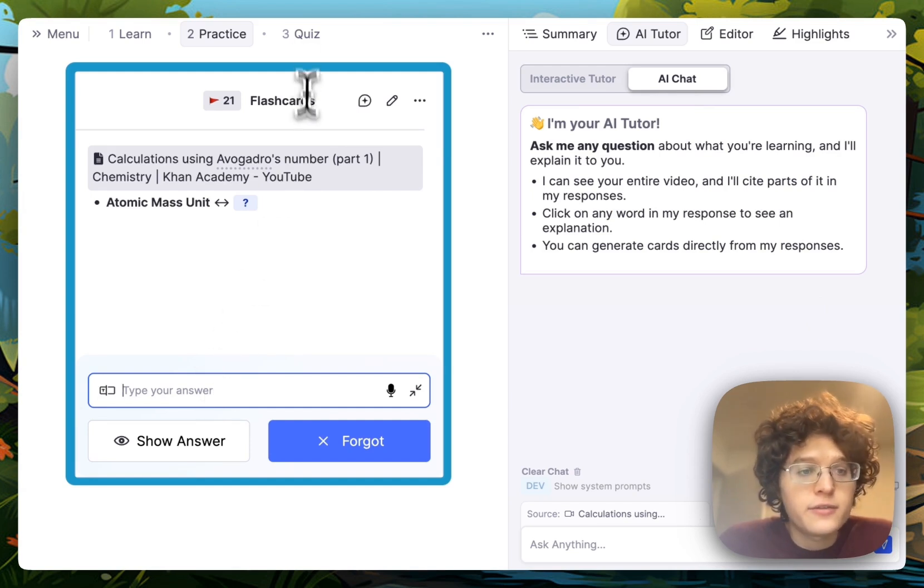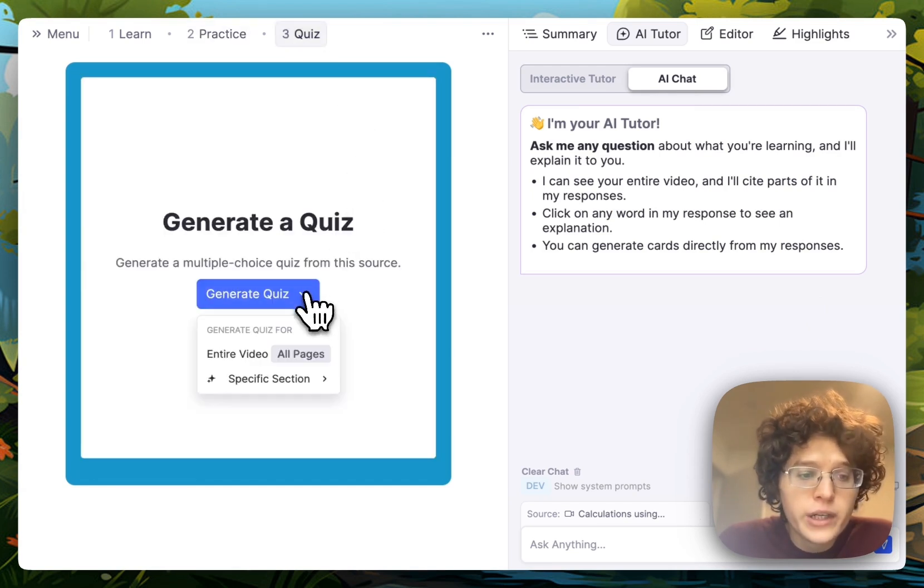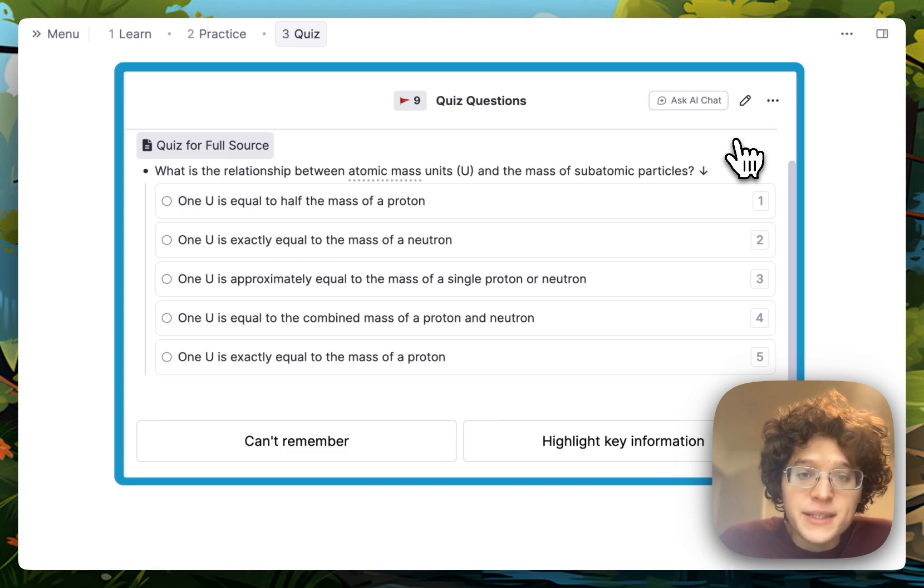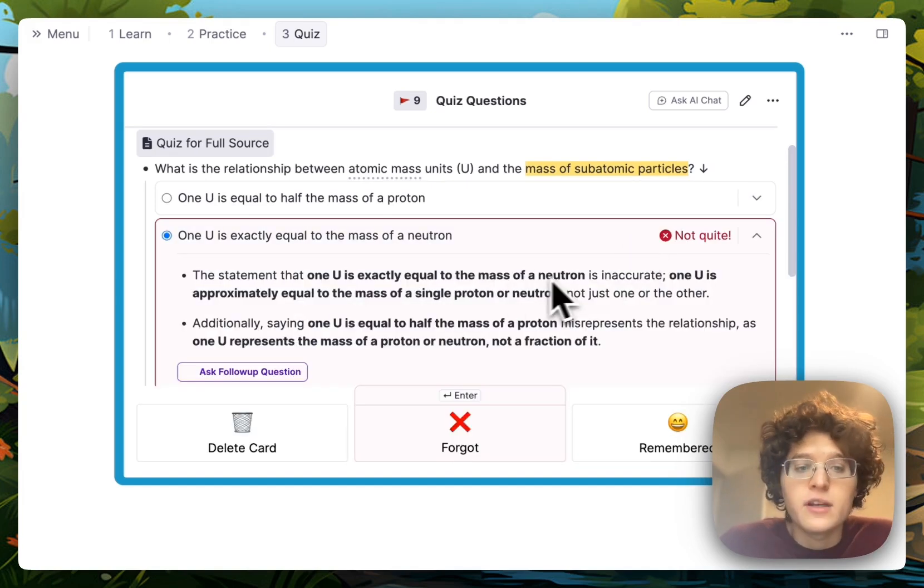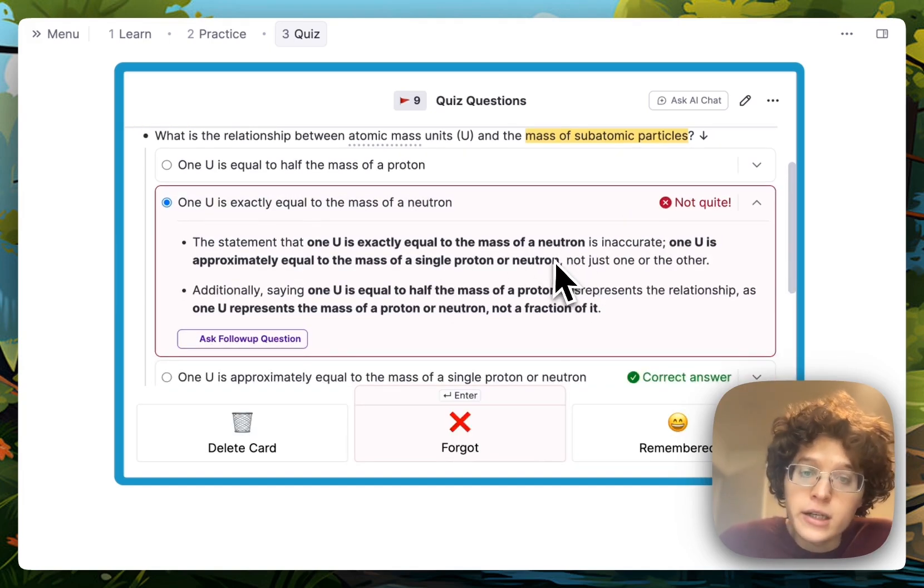You can also generate a quiz from either the entire video or a specific portion of it. For the generated quiz, you can either answer it directly, get a hint by highlighting key information, or just put in your answer, and then immediately get graded with feedback on the right answer.